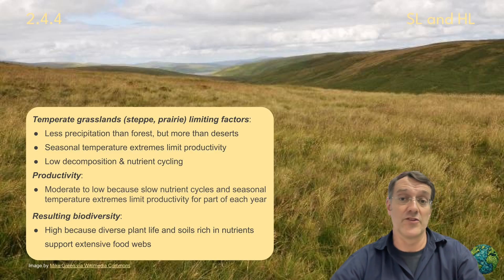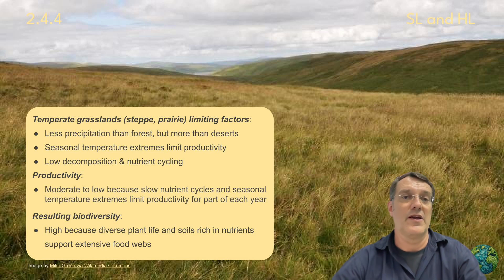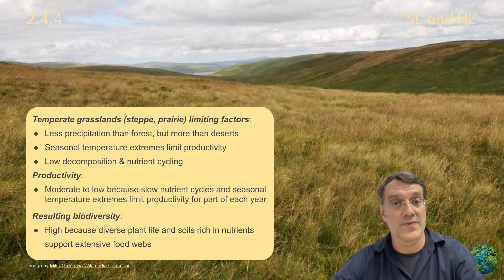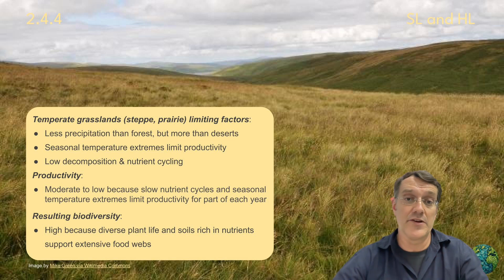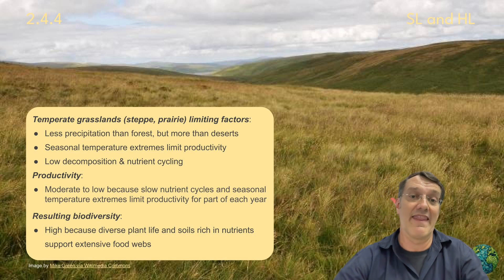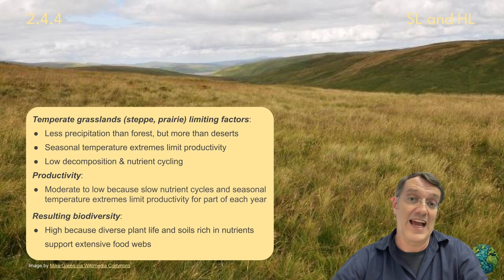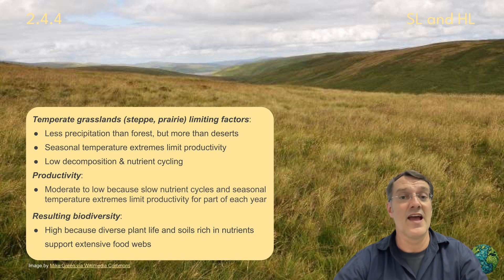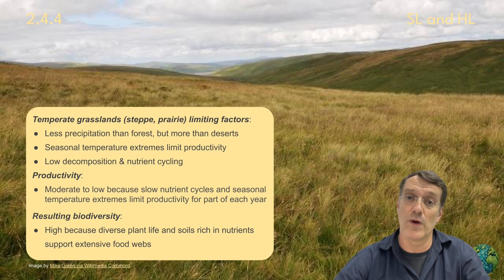Temperate grasslands — also known as steppes or prairies — occupy a middle ground. They receive less precipitation than forests but more than deserts. They have seasonal temperature extremes and relatively slow nutrient cycling, which limits productivity. However, these ecosystems support really high biodiversity because they have so many different plant species and their nutrient-rich soils support really extensive food webs.